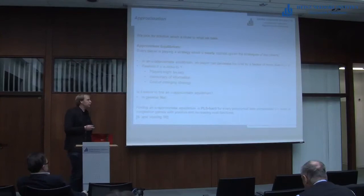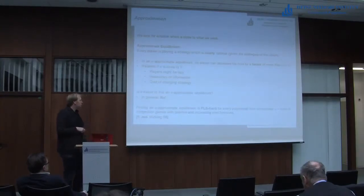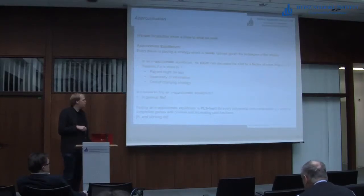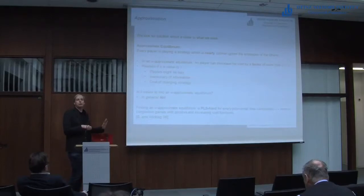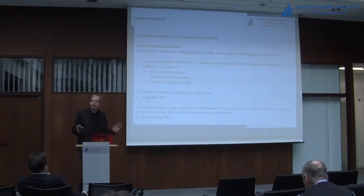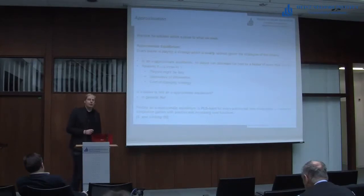Is it easier to find such an approximate equilibrium? Unfortunately, the answer is in general no. In a 2008 paper, we showed that finding an alpha-approximate equilibrium is again hard for this complexity class, for every polynomial-time computable alpha — so even for very large alphas it's still hard to find one. Even if you restrict your attention to congestion games with only positive and increasing cost functions, even for very large alphas it might still be very difficult to find such an approximate equilibrium. People thought for a few years that this concept was dead and it didn't make sense to look at it anymore.